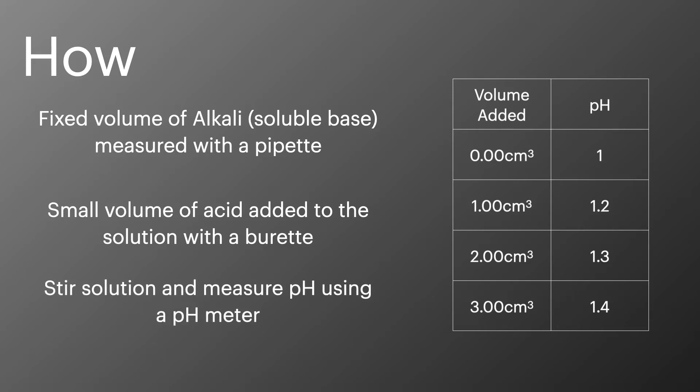The pH is then measured using a pH meter. Unlike a normal titration, an indicator isn't used as this only shows when the reaction is complete and doesn't allow us to track the pH throughout the process.